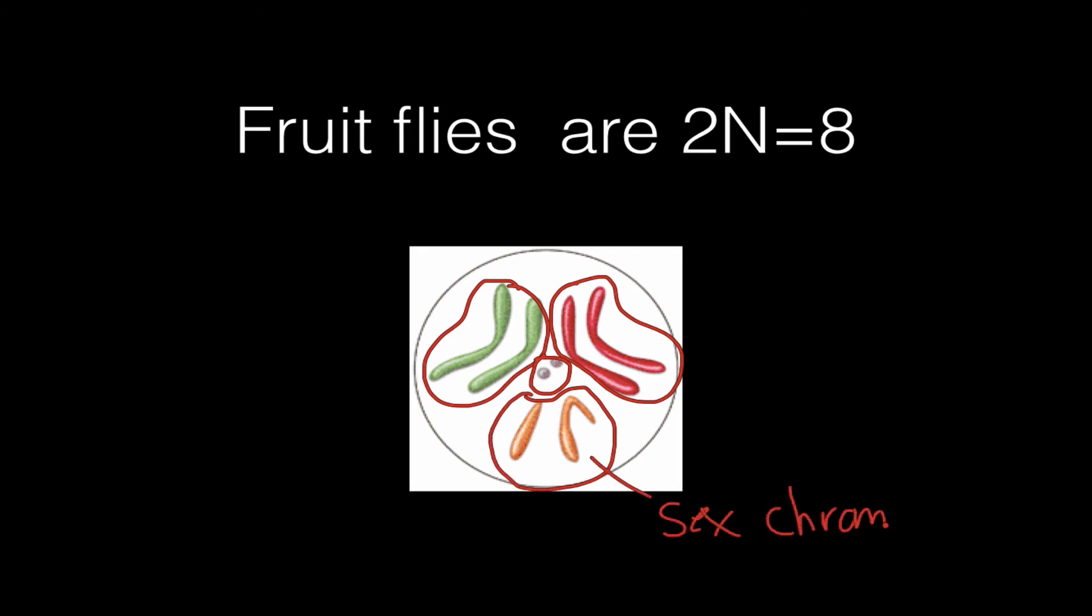So we can look at sex chromosomes in fruit flies just like we do in humans. We could label this one the X, and this one the Y, and the Y has a little hook on it.